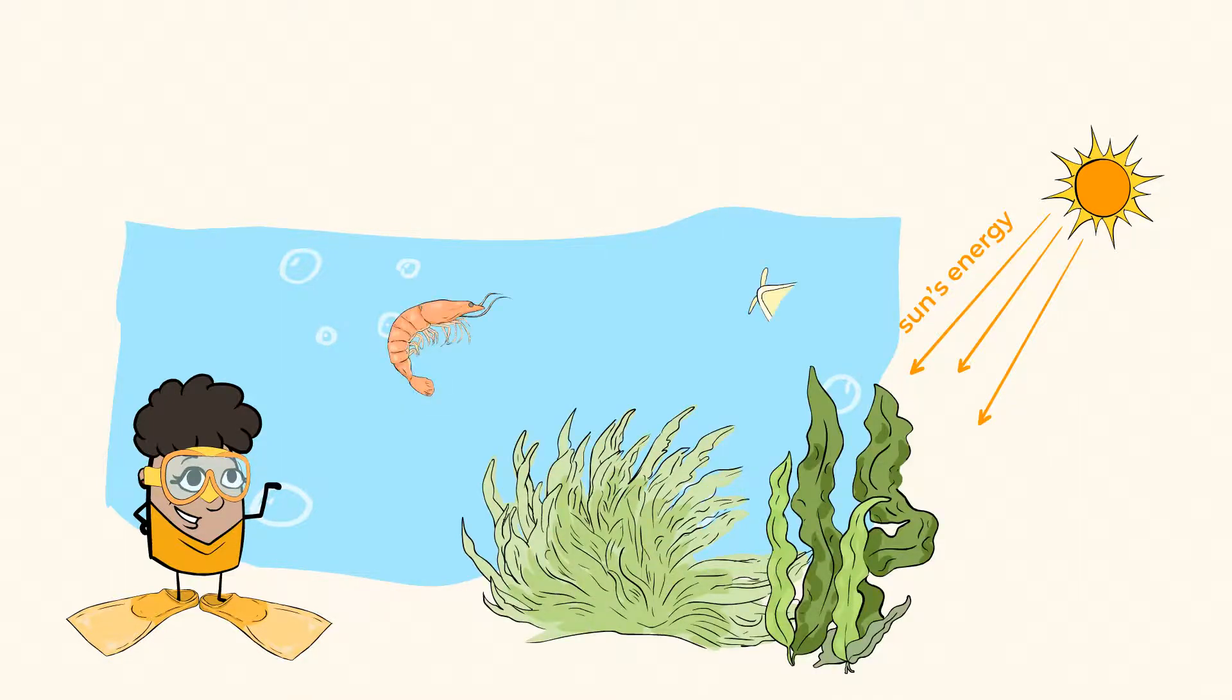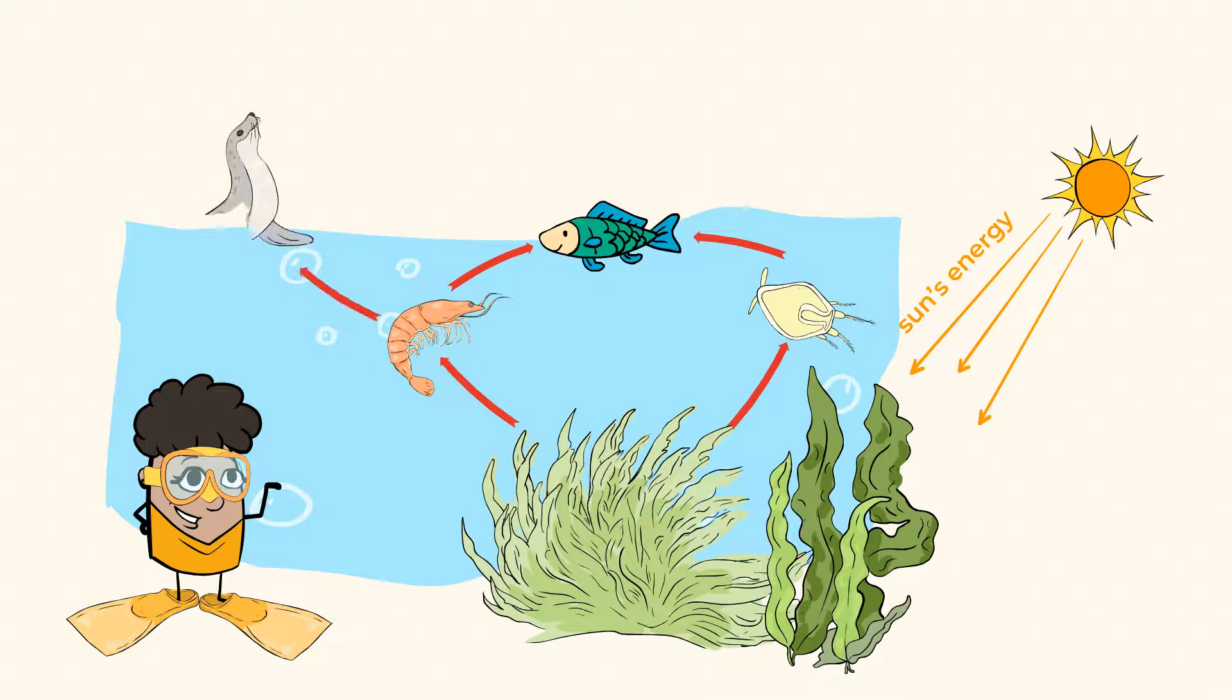Animals like shrimp and a tiny sea creature called zooplankton feed on algae. Along comes a hungry fish who gobbles up the shrimp and some zooplankton. That shrimp could also be dinner for a seal or maybe a passing seagull.